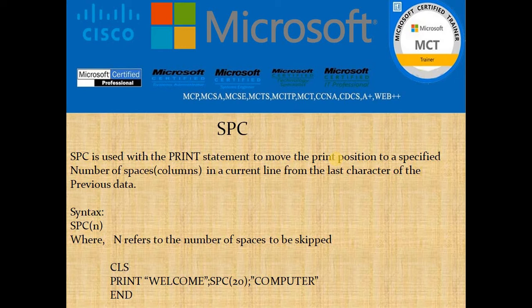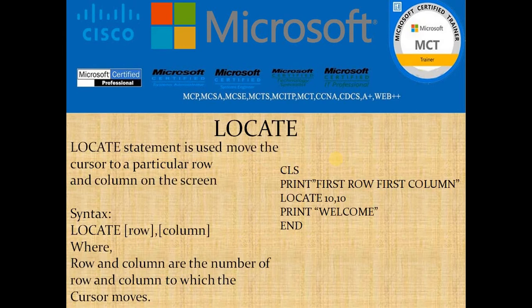The syntax is SPC(n), where n refers to the number of spaces to be skipped. For example: PRINT 'Welcome' — the word 'Welcome' gets printed at the first row, first column. After that, SPC(20) skips 20 spaces from where 'Welcome' ended, and then the word 'Computer' gets printed leaving a gap of 20 columns. Although it looks similar to TAB, the difference is that SPC skips from the last character's position rather than from column 1.